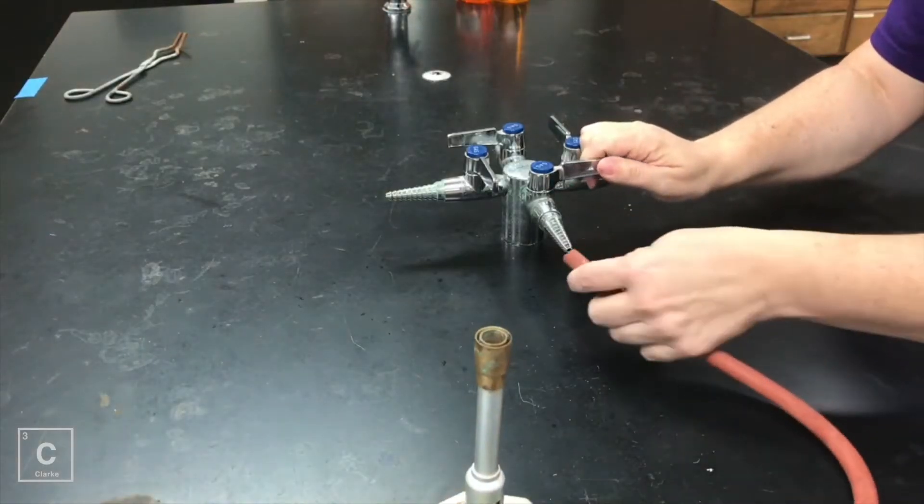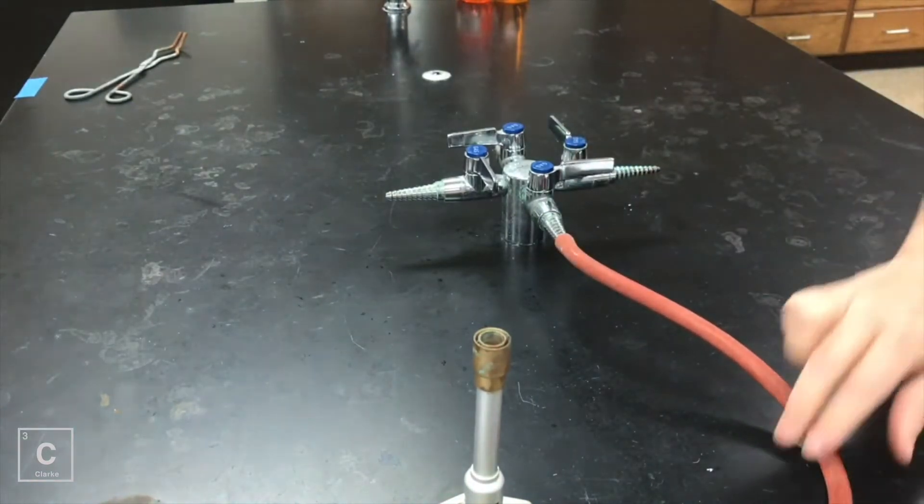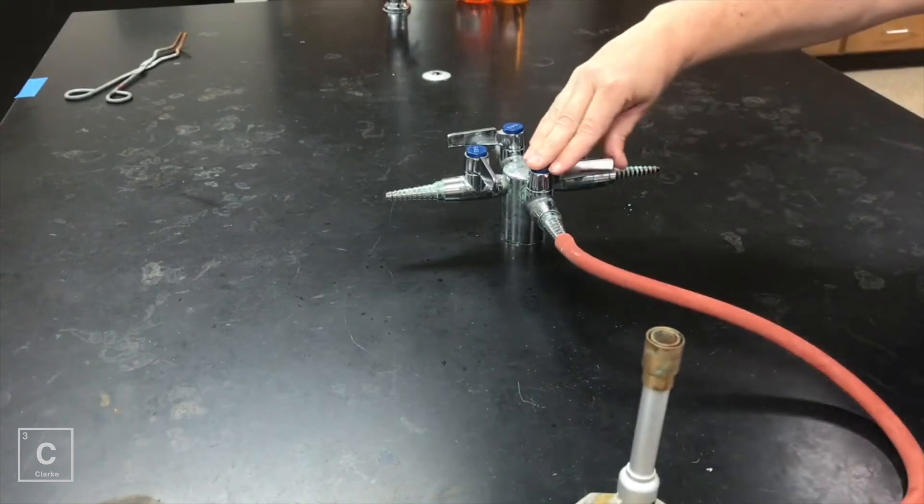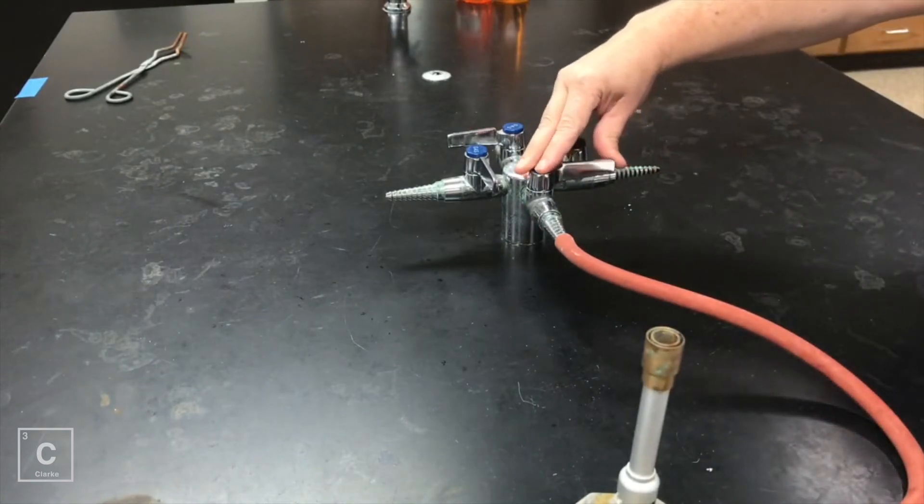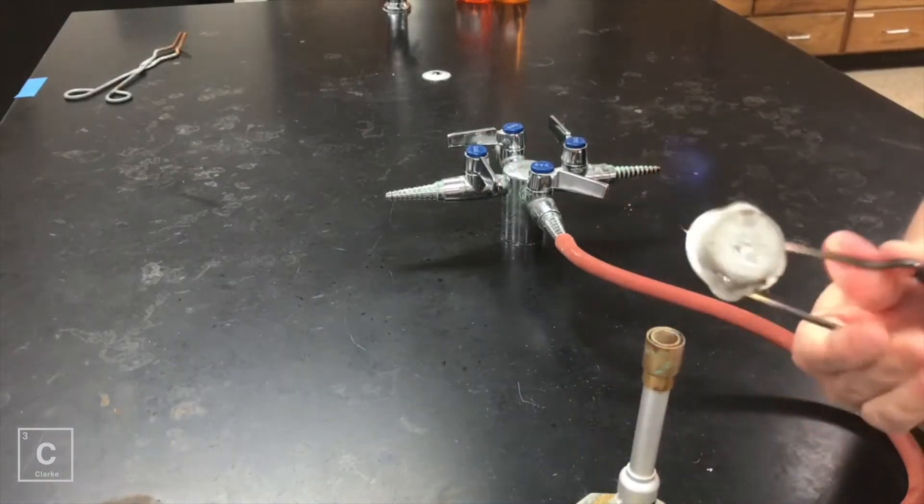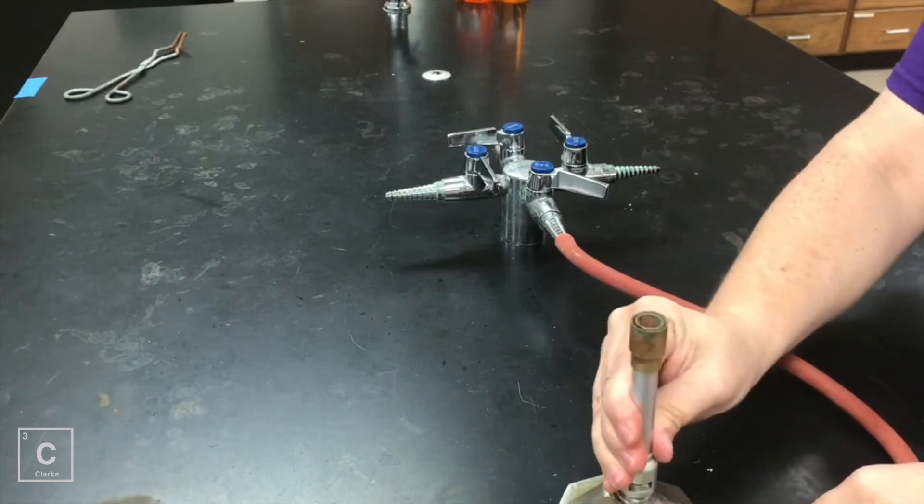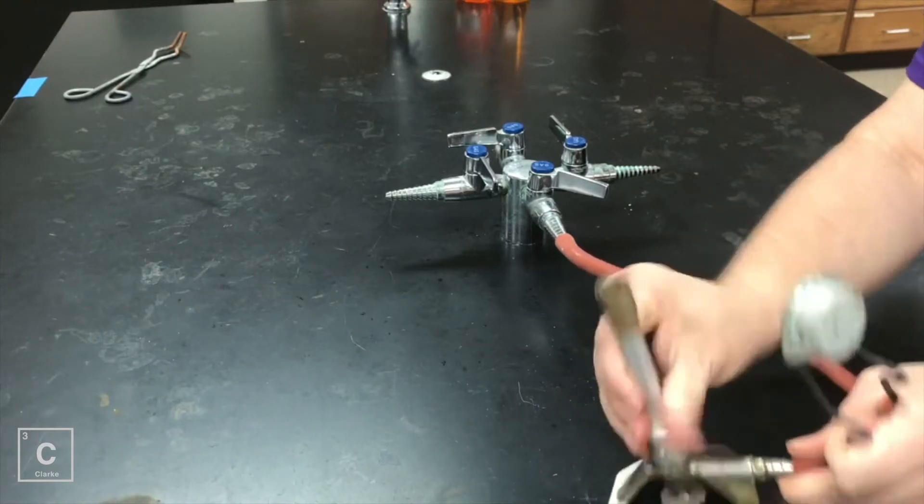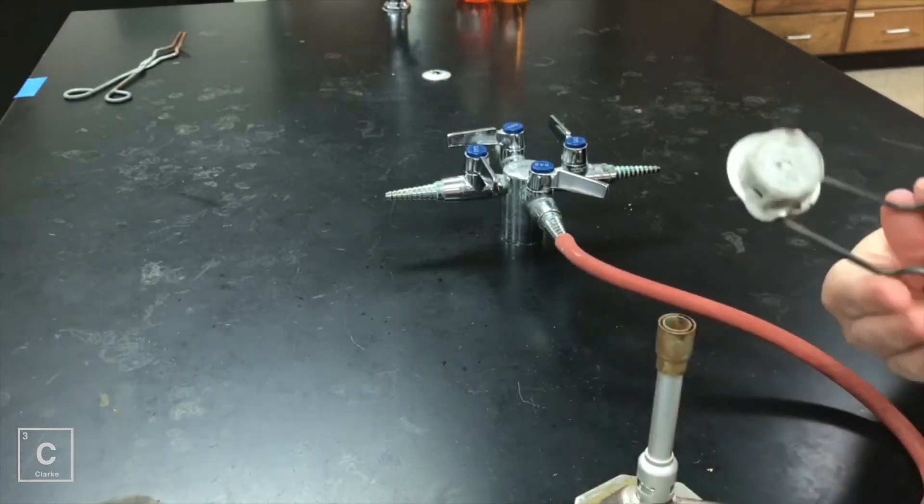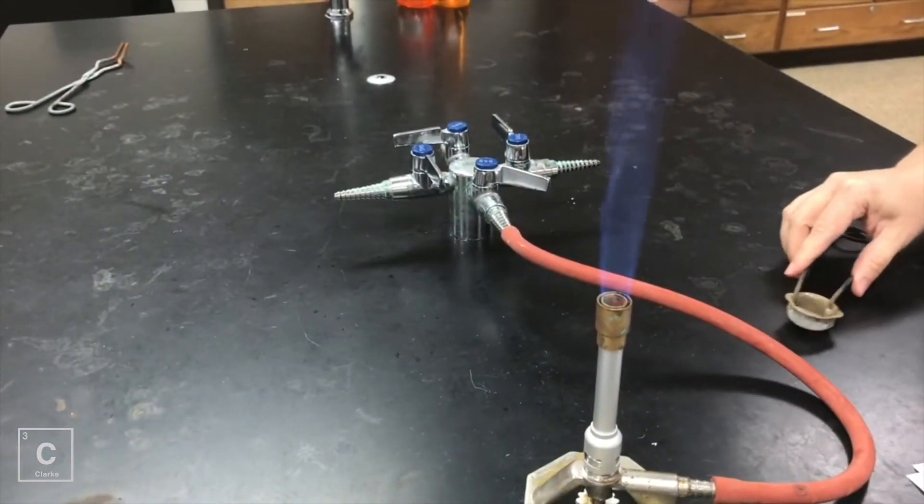We are going to connect the hose to the gas valve and we're ready to light the Bunsen burner. We are going to turn on the gas at a 45 degree angle. I can hear the gas. I see that there's too much air so I'm going to decrease the air a little bit. And try to light it again. And now the flame is on.